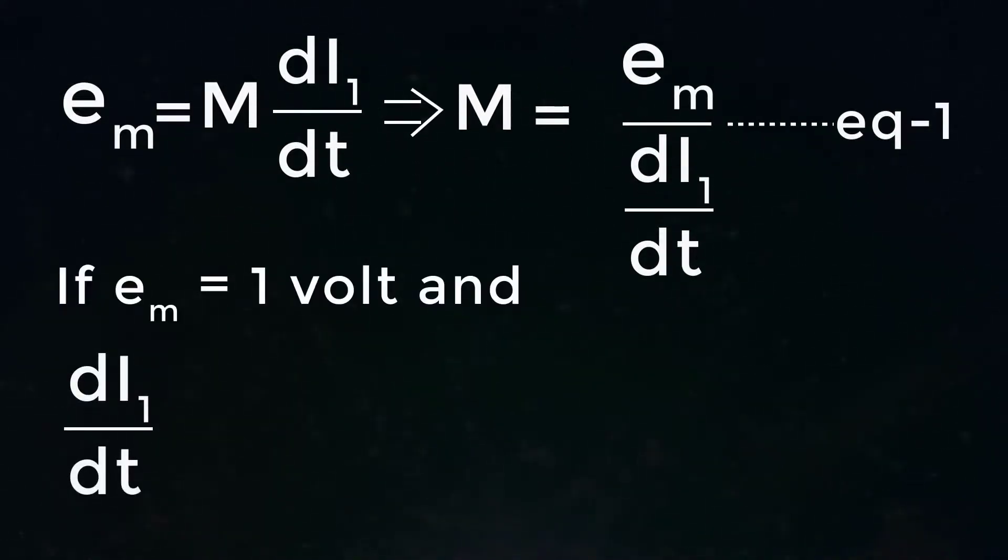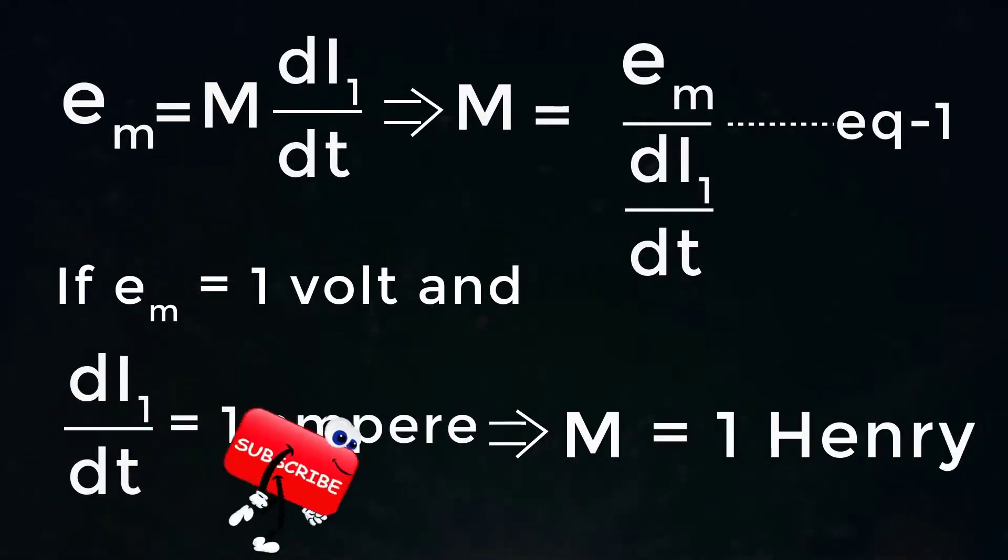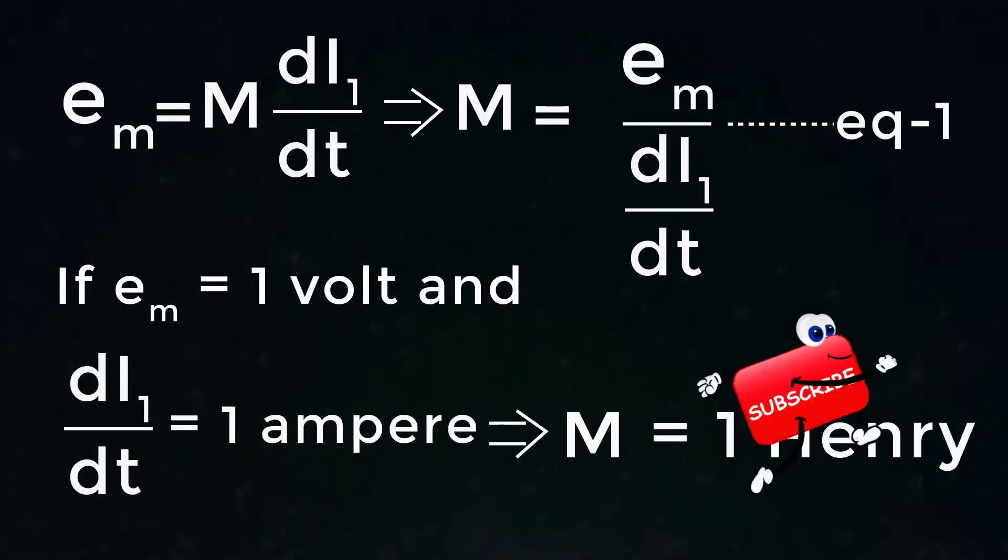If e_m is equal to 1 volt and dI₁ by dt is equal to 1 ampere, then putting this value in equation 1, we get the value of mutual inductance as M equals 1 henry.